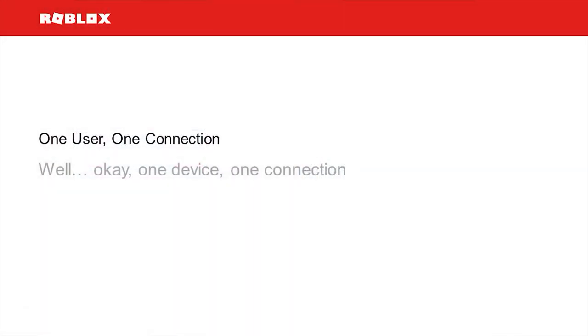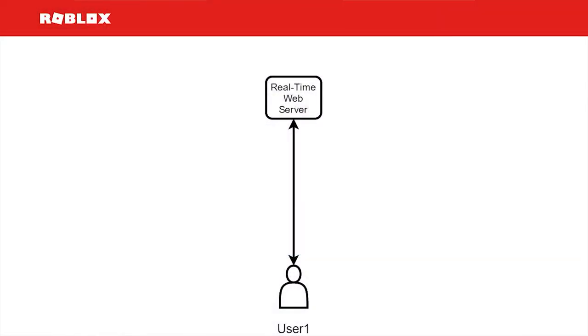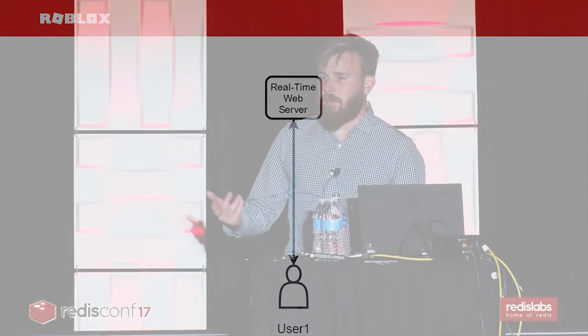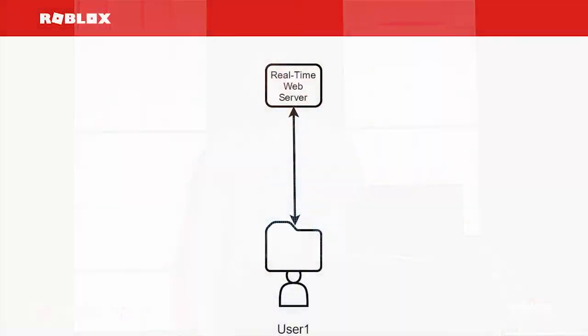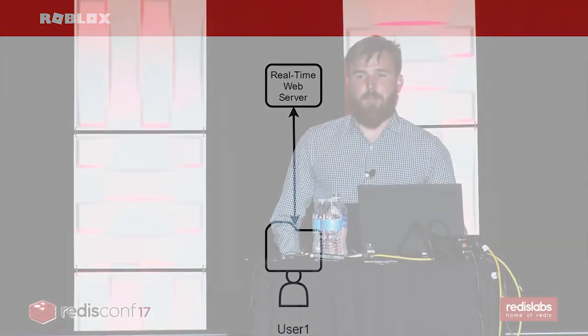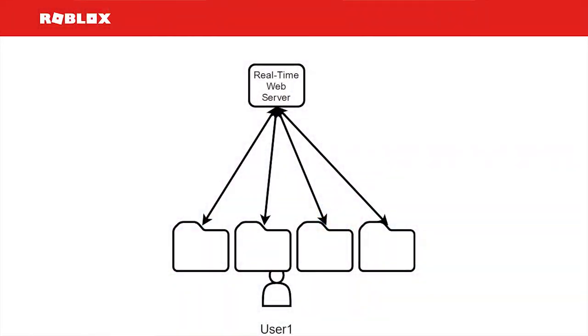One user, one connection might be a little too ambitious, but one device, one connection — surely we can do that. However, there are a few problems. If a user is on a desktop computer, they can open two tabs, 10 tabs, or 100 tabs. If all of them connect, that starts to blow out our scale. Even though we have a large mobile audience, our desktop audience is sizeable enough that many users with lots of tabs would significantly increase the number of WebSocket connections we needed to support, and it was becoming increasingly clear that would be one of the areas we'd need to scale the most.